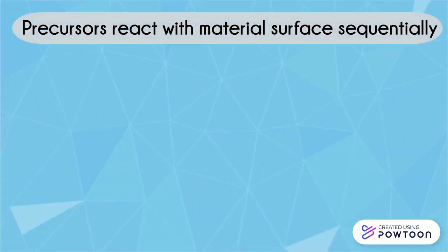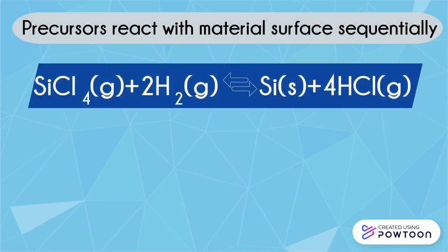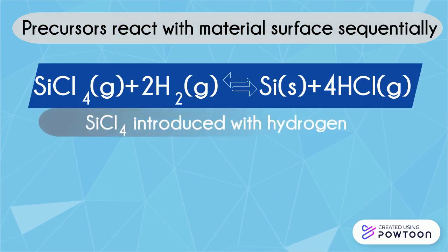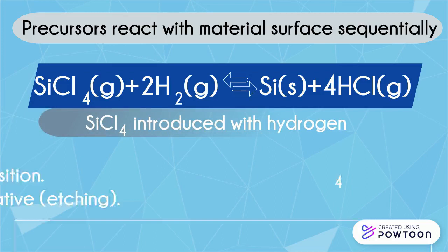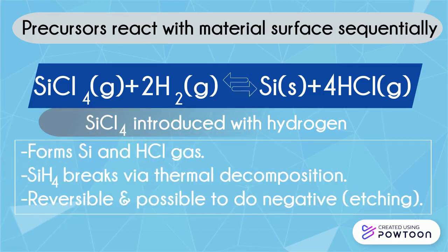Precursors react with the material surface sequentially. As you can see in the chemical reaction above, silicon tetrachloride is introduced with hydrogen, forming silicon and hydrochloric gas. Silane breaks via thermal decomposition, which shows that the equation is reversible, and it is also possible to do the reverse, which is etching.